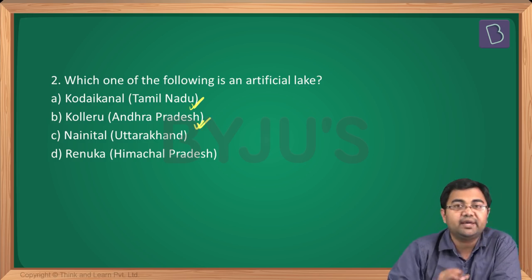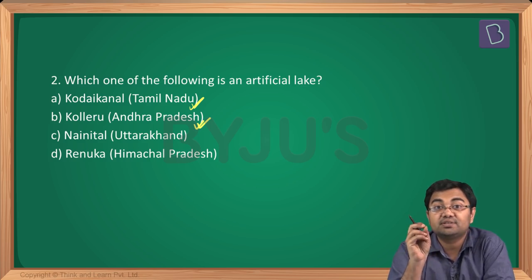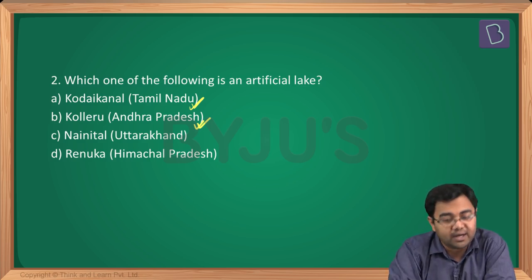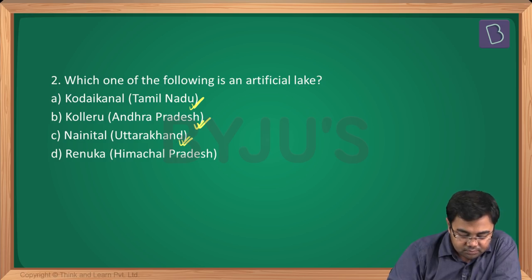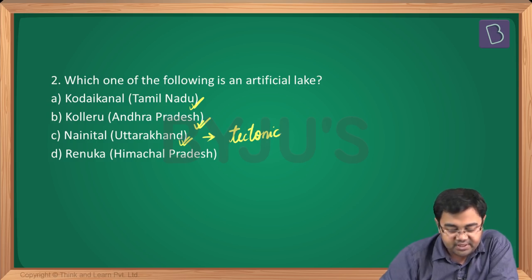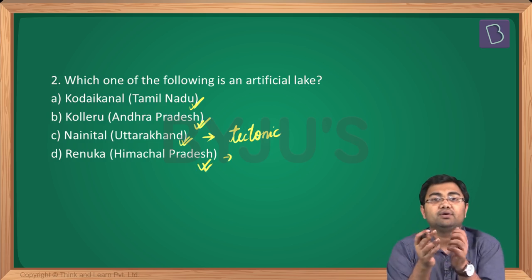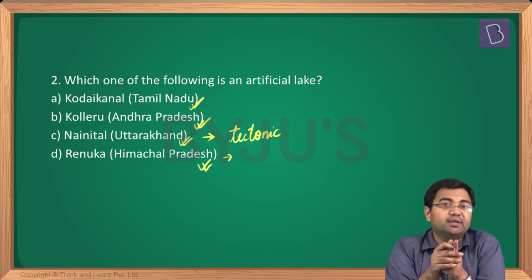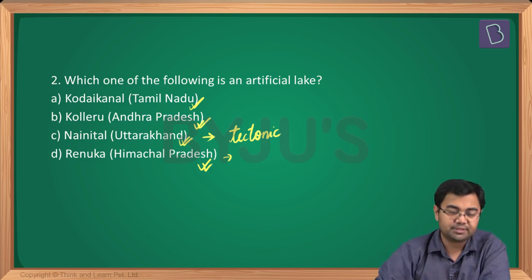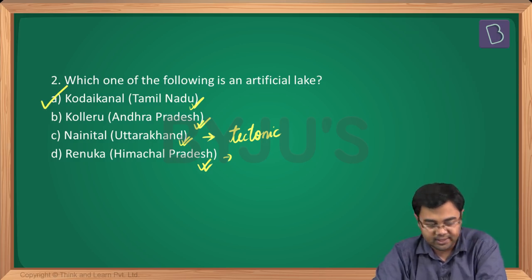Kolleru Lake is in Andhra Pradesh and is one of the largest lakes there — known as the largest shallow water lake in Andhra Pradesh. Nainital is tectonic in origin, so it is not an artificial lake. Renuka Lake is a freshwater lake and the largest lake in Himachal Pradesh, so it is also not artificial. The answer here is A — Kodaikanal Lake.